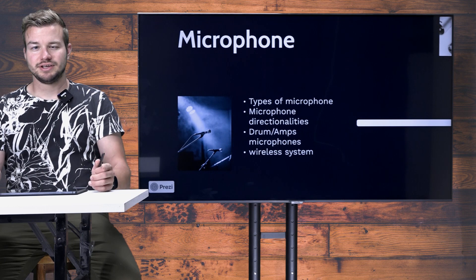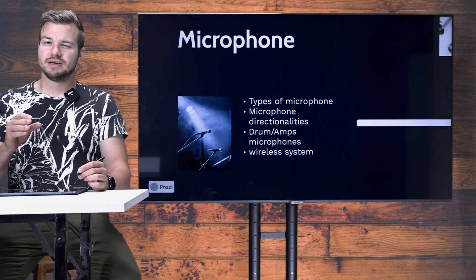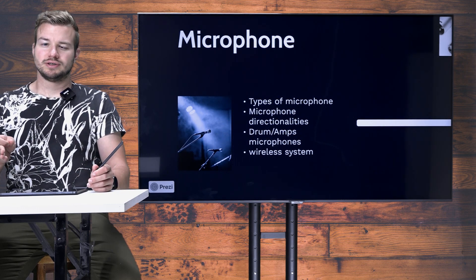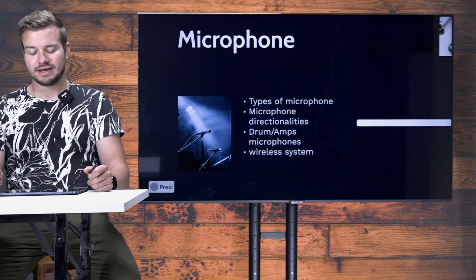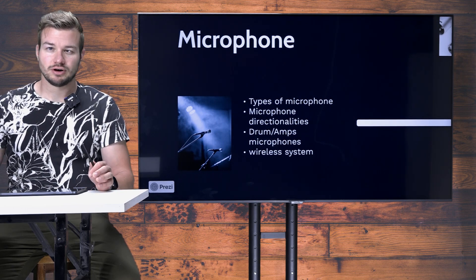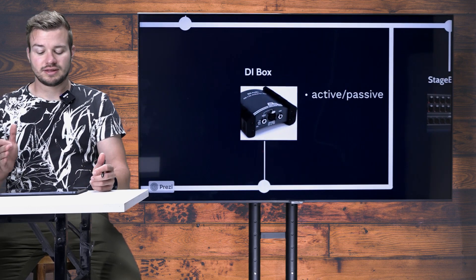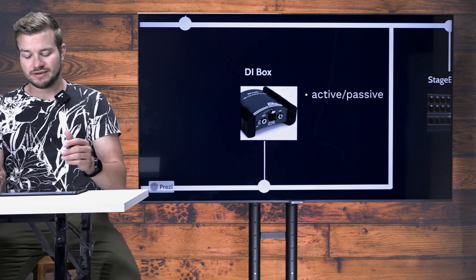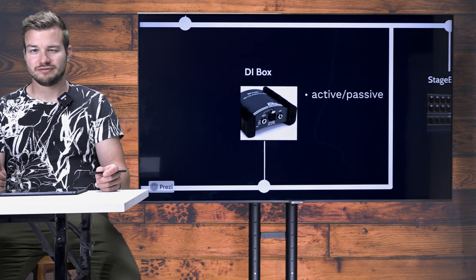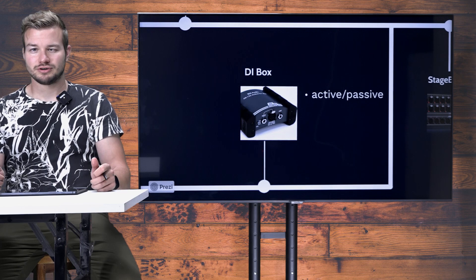In unit number two we talked a lot about microphones — different types, polar patterns, how to mic a drum kit, how to mic an electric guitar amp, and we also talked about wireless systems. Another source of signal could be the instrument itself, and for that we often use DI boxes. We differentiate between active and passive DI boxes. Active DI boxes need to be fed with additional power, and we can use phantom power for this. What a DI box is and why we use it was also covered in unit 2.